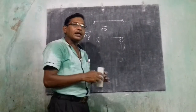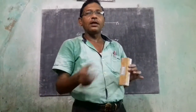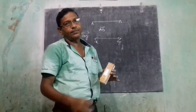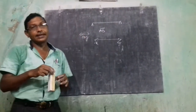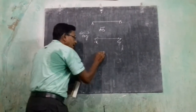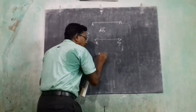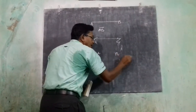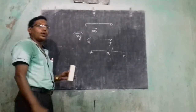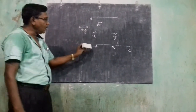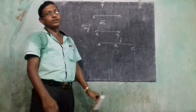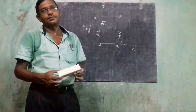Now, collinear points — do you know what collinear means? Collinear means three points which are on the same line. Three points A, B, and C that lie on a single line are known as collinear points. If three points are not on the same line, they are known as non-collinear points.